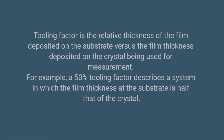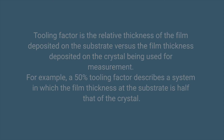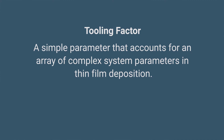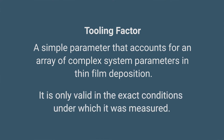Let's begin with our theoretical description of tooling factor. Simply put, tooling factor is the relative thickness of the film deposited on the substrate versus the film thickness deposited on the crystal being used for measurement. For example, a 50% tooling factor describes a system in which the film thickness at the substrate is half that of the crystal. Tooling factor is a simple parameter that accounts for an array of complex system parameters in thin film deposition. For this reason, we must remember that tooling factor is only valid in the exact conditions under which it was measured.